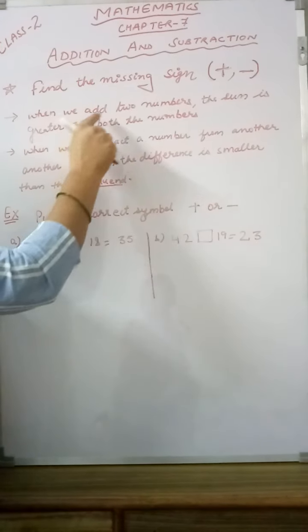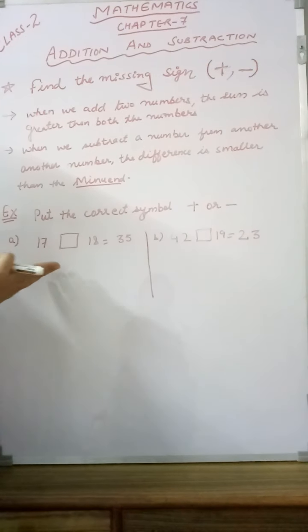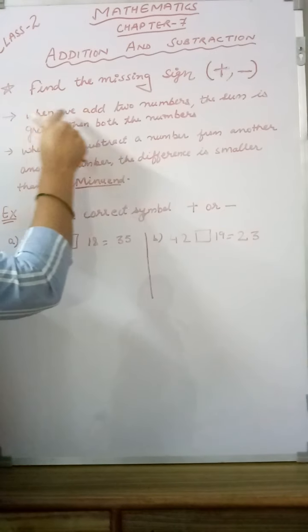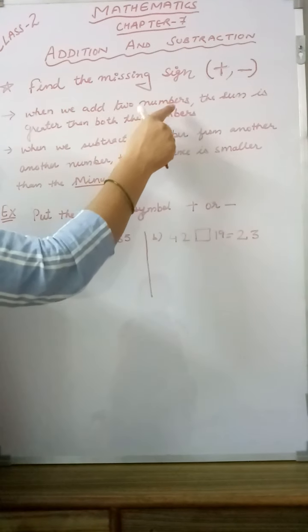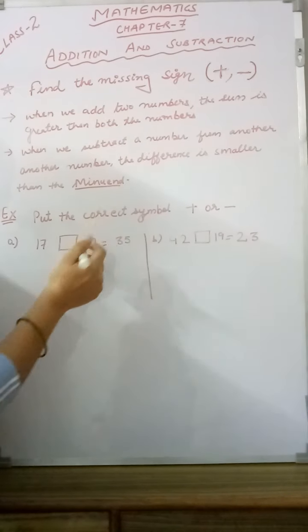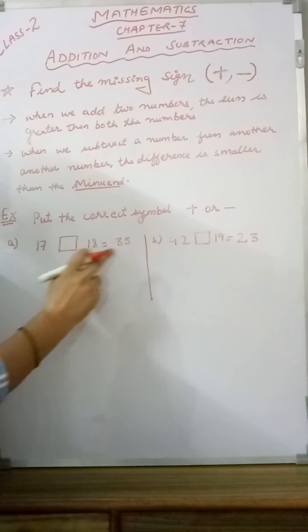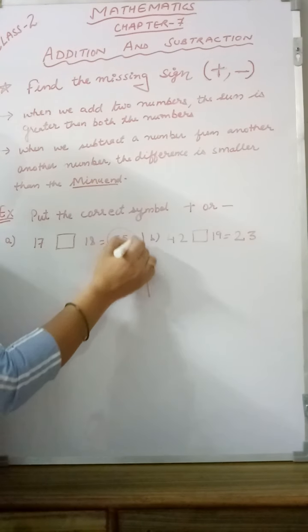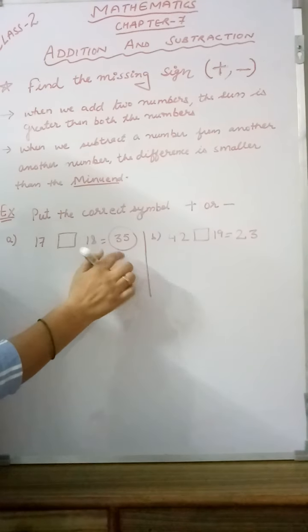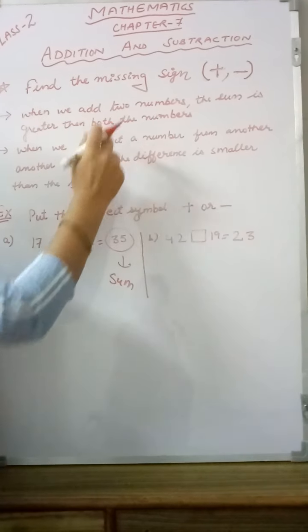When we add two numbers, we don't know whether we have to put plus or minus, but there is a trick. When we add two numbers, the sum is greater than both the numbers. So, three numbers are given: 17, 18, and 35. This 35 is the answer. When we add two numbers, this is called the sum, and this sum is greater than both the numbers.